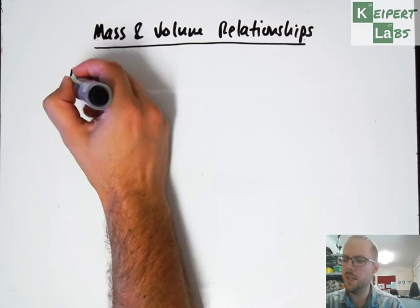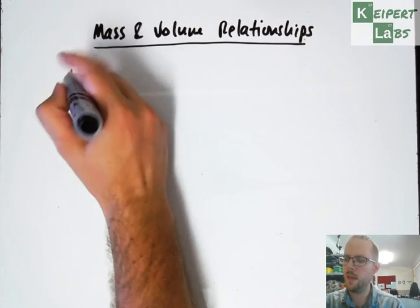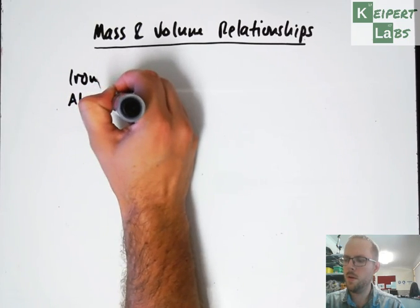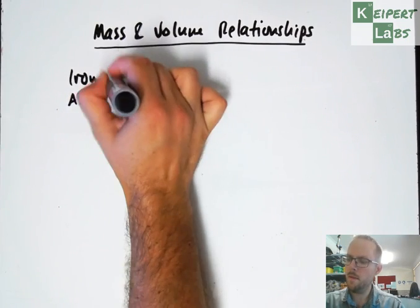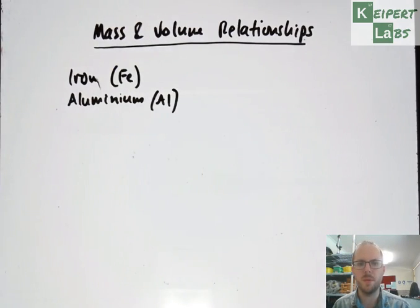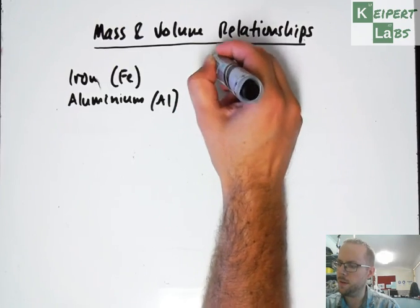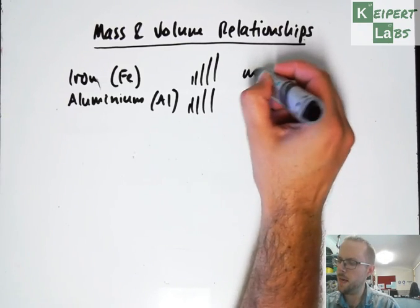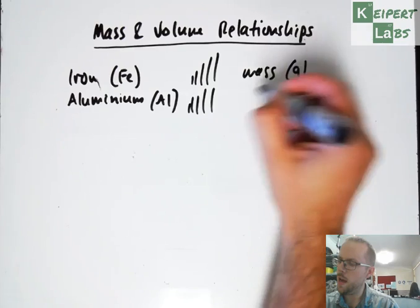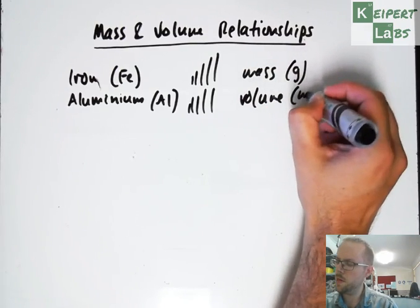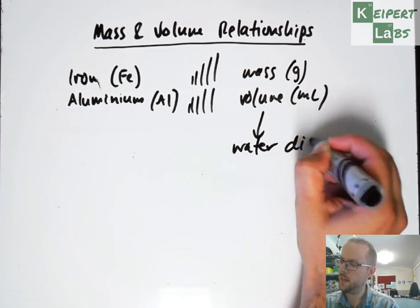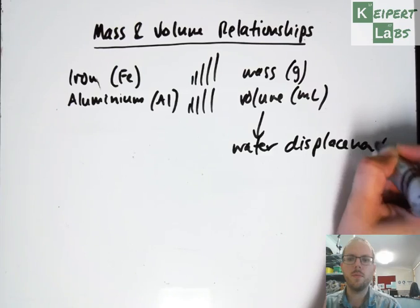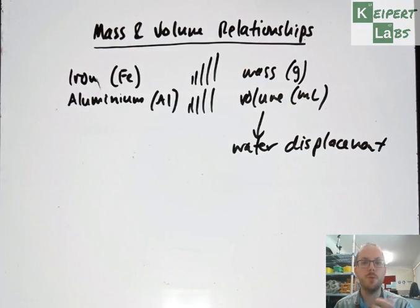Just remembering what we did in this particular activity: you had some samples of iron and aluminum rods, iron with the symbol Fe and aluminum with the symbol Al, and you had samples of the rods of varying lengths, five of each. Then you measured their mass in grams and you measured their volume in milliliters by water displacement. That's the technique of taking a measuring cylinder filled with water, placing the rod in it and seeing how much it pushed the water level up by, and then working out how much volume it would take up.